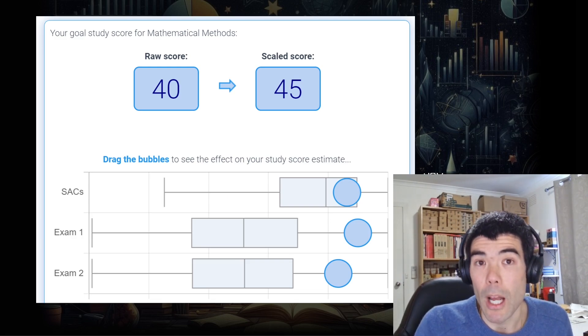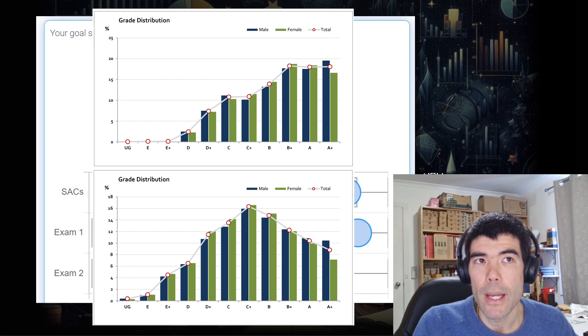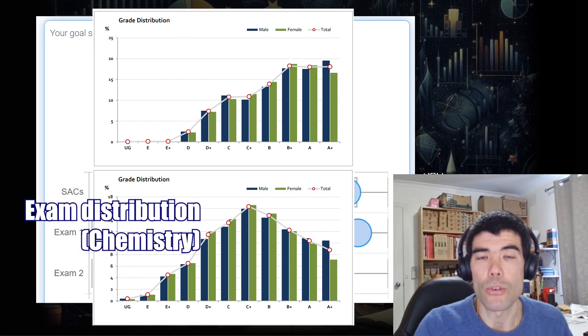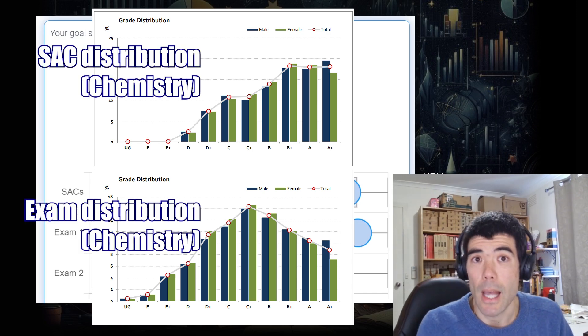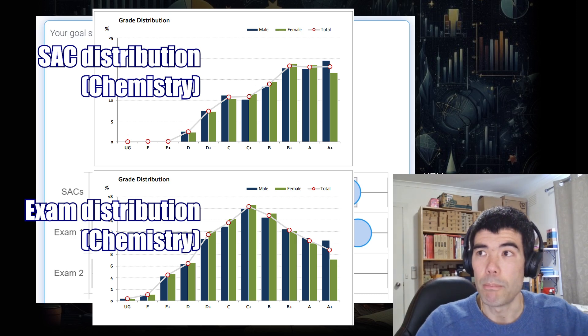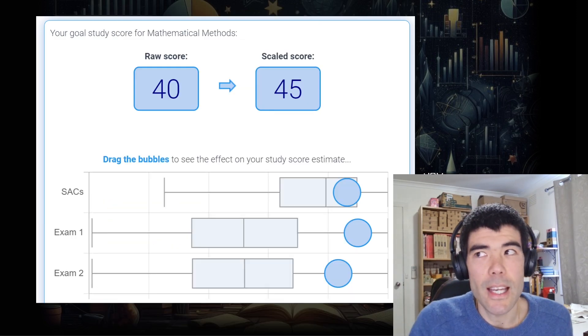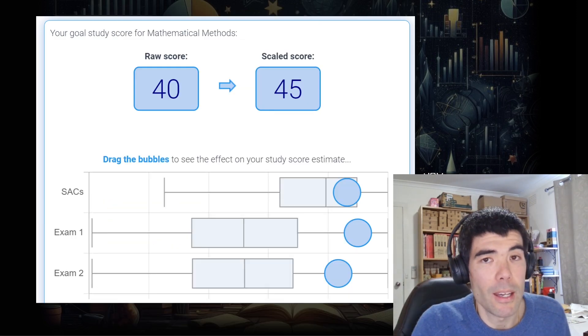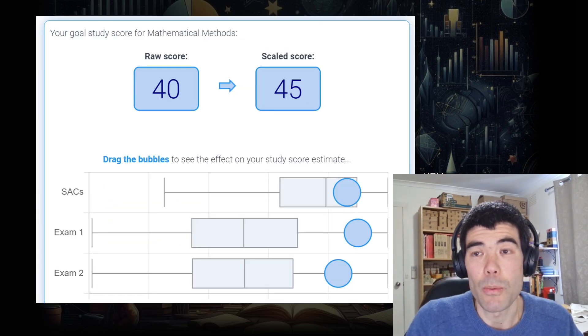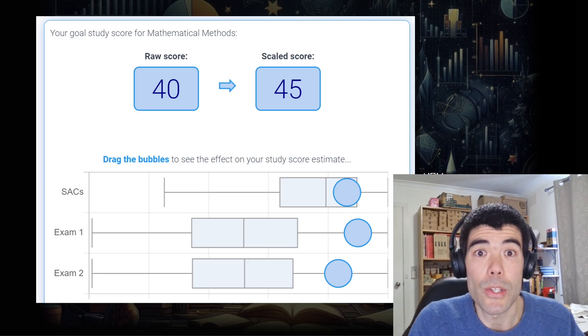One more thing that also might help in your favour is that the spread in the exams can tend to be greater than the spread in the SACs. So by getting a good exam score, you can put yourself above more students and then boost that study score up. At the end of the day, you can't change the past, none of us can. All you can do is do the best with what you have and prepare as well as you can for your exam.